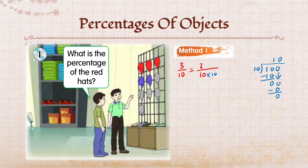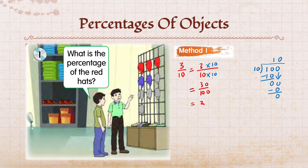Nombor bahagian bawah darab 10, nombor bahagian atas pun kena darab 10. Kita selesaikan — kita akan dapat 30 per 100. Berdasarkan pecahan per 100 ini, kita tukar kepada peratus. Kita akan dapat 30 peratus. Peratus untuk topi yang berwarna merah ialah 30 peratus.